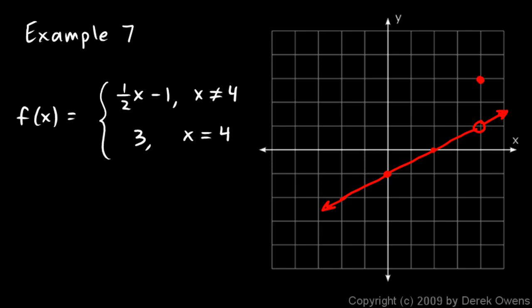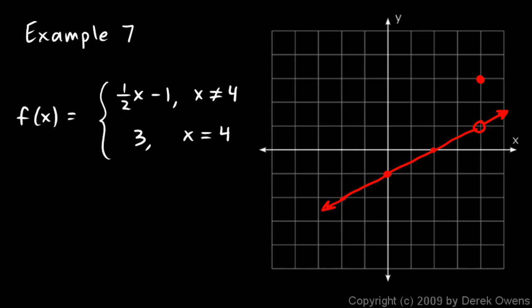We're told that if x equals four, the function has a value of three, so right there at x equals four the graph has a value of three — that point sits right up there. This function is simply a line, but that line has one infinitely small gap in it. This is just the way we represent that single missing point, and at that x value the function has a value of three instead.